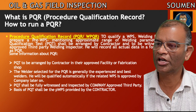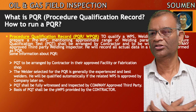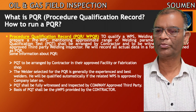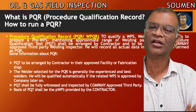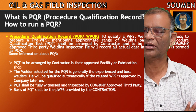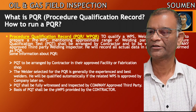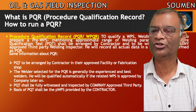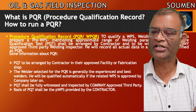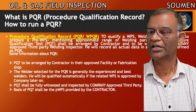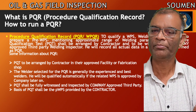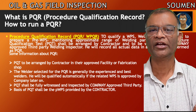The next question is: what is PQR and how to run a PQR? Procedure qualification record, termed PQR or WPQR (welding procedure qualification record). To qualify a WPS, the welding engineer needs to prepare a pre-WPS using the same WPS format, but with approximate ranges of current, voltage, and all parameters based on normal practice. To verify or validate this data, we need to run a PQT — procedure qualification test. It shall be arranged by the contractor and witnessed by a company-approved third-party welding inspector. The inspector will record the actual data in a form termed the PQR. A third-party inspector is used to ensure impartiality and accurate recording of the actual data.